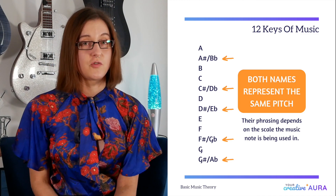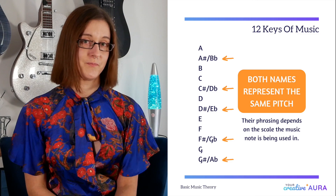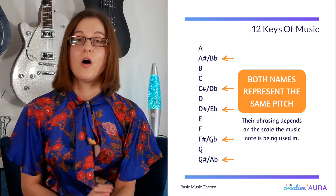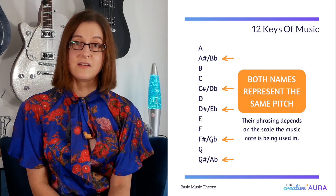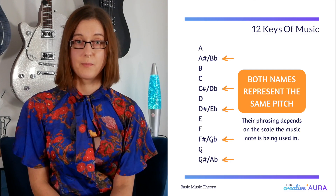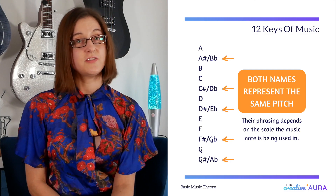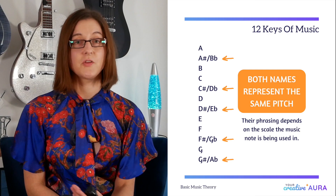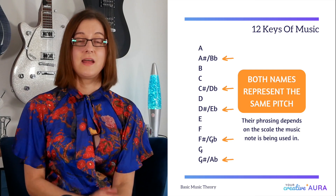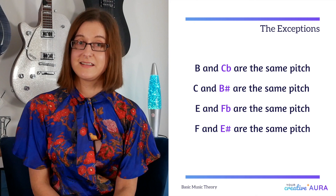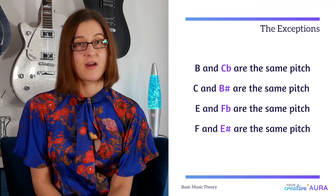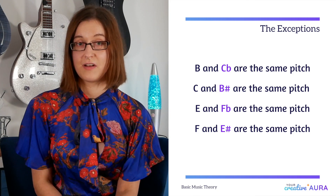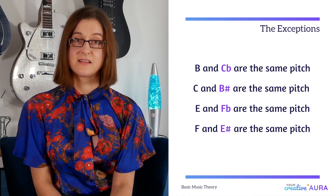Key signatures we do discuss in video four. Now as you can see, B to C and E to F are the only consecutive letters that don't have a flat or a sharp pitch. However, in certain scales, these can be phrased as a flat or a sharp pitch. So for example, the letter B can be phrased as a C flat, a C can be phrased as a B sharp, E can be phrased as an F flat and F can be phrased as E sharp.